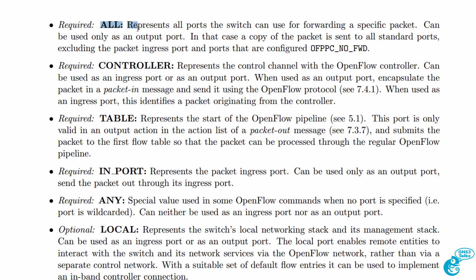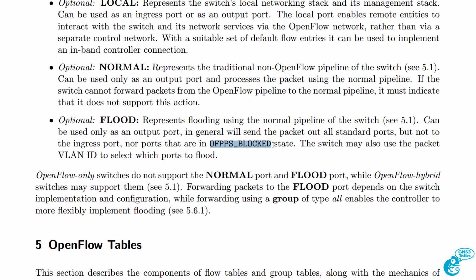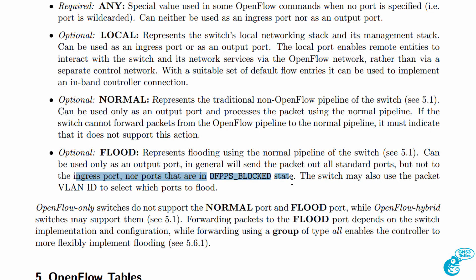Notice the difference between ALL — which sends out of all ports except those marked as no-forwarding — versus FLOOD. FLOOD uses the normal pipeline of the switch and sends out of all ports except ports that have the OpenFlow blocking state set. So what takes precedence on a switch — OpenFlow or spanning tree? Generally per the OpenFlow document, spanning tree takes precedence. If spanning tree is blocking a port, OpenFlow packets will also be blocked, and the controller is aware that spanning tree is blocking that port. So when you send traffic to the FLOOD port, it goes out all ports but not the ingress port or ports marked with OpenFlow blocking — meaning if spanning tree is blocking a port, traffic will not go through it.